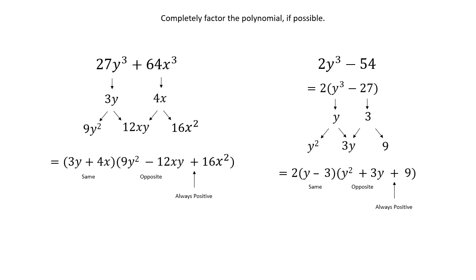And here are your answers. The roots for the first expression are 3y and 4x. And when you do square multiply square, you get 9y squared, 12xy, and 16x squared. And you see the resulting factors at the bottom with the same opposite and always positive signs. And for the 2y cubed minus 54, you do have to take out a GCF first with that one. So you factor a 2 out. That leaves you with y cubed minus 27. And then you can pull your roots, which are y and 3, and create your square multiply square. y squared, 3y, and 9. The resulting expression, again, don't forget, your same opposite and always positive.